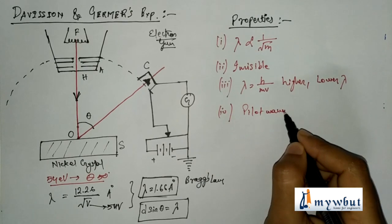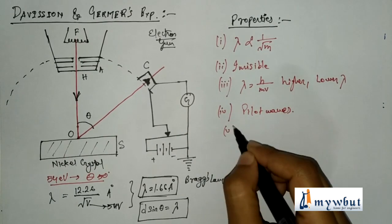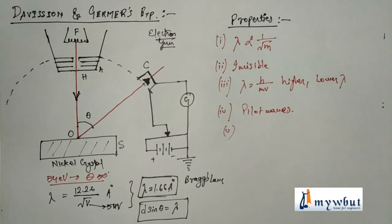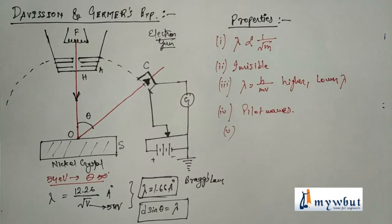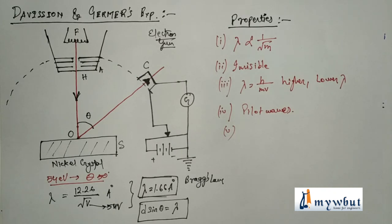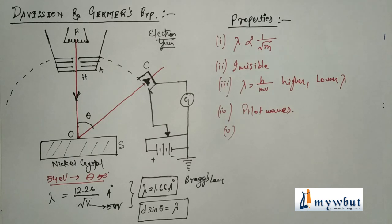Property (4): The De Broglie wave guides the particle, so these waves are also called pilot waves. Property (5): The amplitude of the De Broglie waves associated with a moving particle measures the probability of finding the particle in space at a particular instant — a larger amplitude means a greater probability of finding the particle at that position.